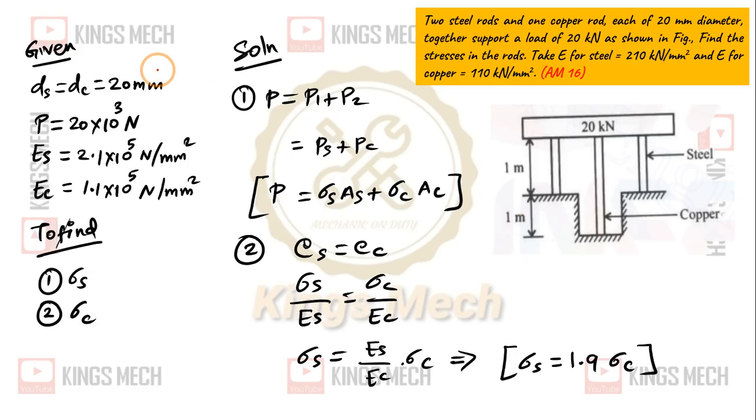Let us go to the given data. ds equal to dc, P value, Es, Ec, values are given. We have to find sigma s and sigma c. So, capital P which is nothing but Ps plus Pc, which is stress times area. So, sigma s As plus sigma c Ac.